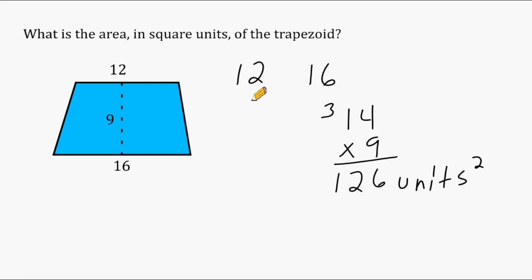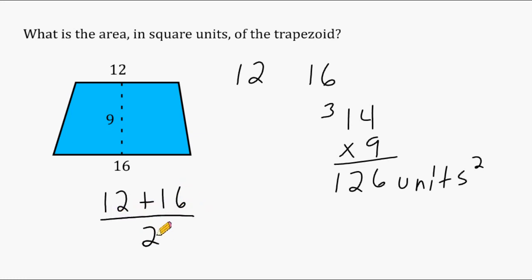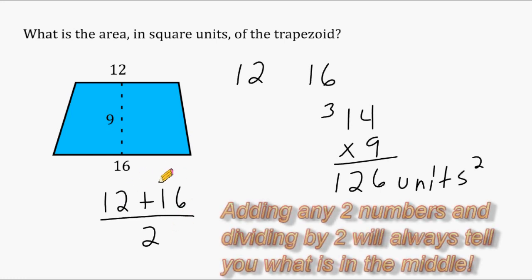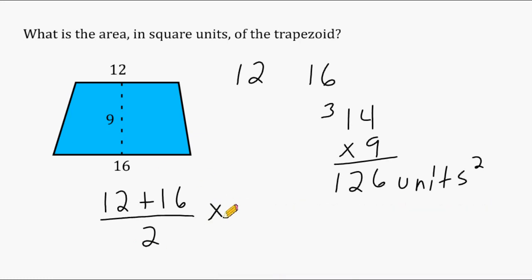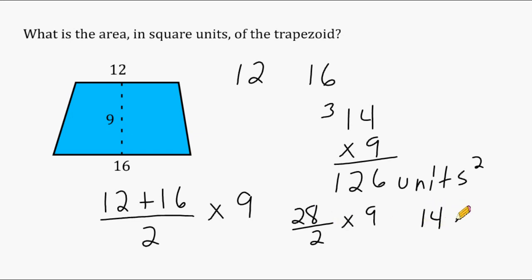That mental math method doesn't work well with large numbers, so you can use a formula instead. Add the two bases together — 12 plus 16 is 28 — then divide by 2, which gives 14. That's really just finding the average of the two bases. Then multiply by the height of 9, giving us 126 square units — the same result.